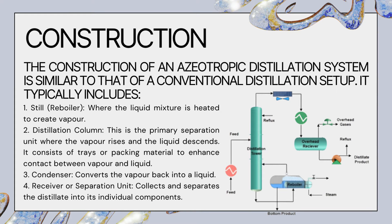As the vapor rises through the column, it comes in contact with the liquid descending from the trays or packing, allowing for mass transfer and separation based on differences in boiling points. The third component is the condenser — once vapor reaches the top of the column, it is condensed back into liquid form. The fourth component is the receiver or separating unit, where the condensed liquid is collected and individual components are separated based on different physical properties such as boiling points.